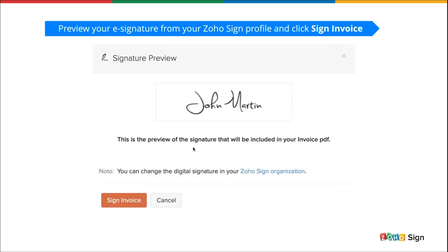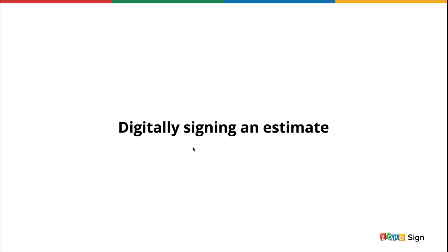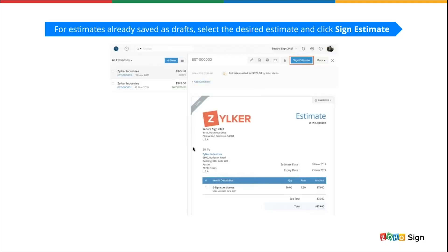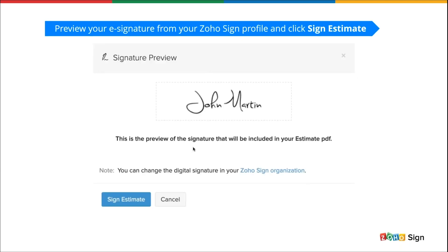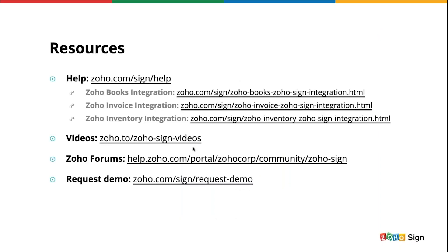The slides are filled with screenshots that will guide you through setting up and using this integration, but I showed a live demonstration instead. You can refer to the recording for the live demo or refer to the slides for documentation. With that, we've come to the end of the walkthrough of the Zoho Sign integration for Zoho Finance apps. Here are a few resourceful links for you to visit and learn more about this integration, as well as links to our forums where you can reach out for help, post queries, and interact with the user community. I'll leave these links on for the next 15 minutes so you can note them down.